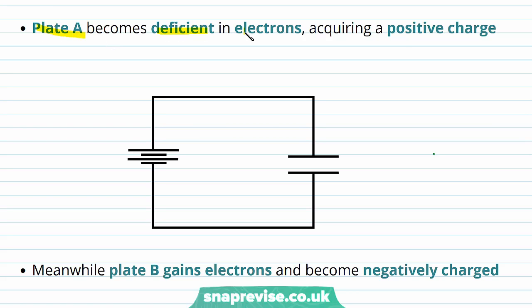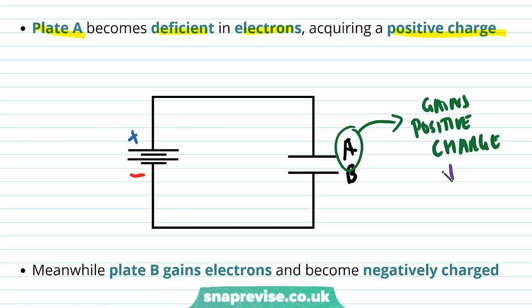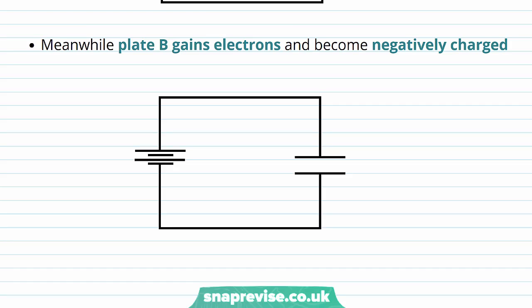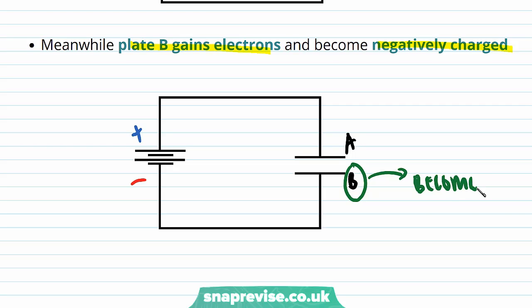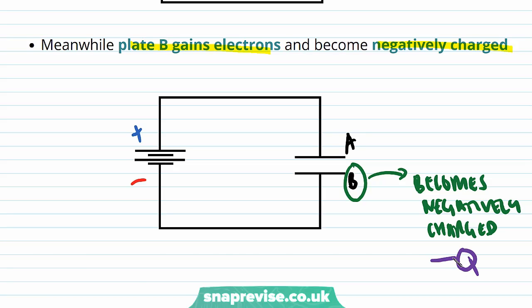Plate A becomes deficient in electrons, acquiring a positive charge — which we'll call +Q. Meanwhile, plate B is gaining electrons, which means it's gaining negative charge. So plate B becomes negatively charged, with the same magnitude of charge as plate A, which is Q, but negative.